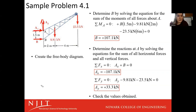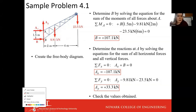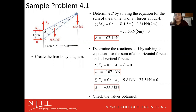Here's our free body diagram — we have A_x and A_y, and then we have our force at B. Determine B by solving the equations for summation of moments of all forces about point A. I always prefer to solve the moments about the pin joint — that makes sense because you have two unknown forces there. If you analyze point A, A_x and A_y both have no moment impact because they go straight through point A. You want to take your moment analysis on some point that is going to get rid of the most unknown values.